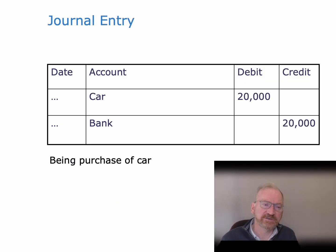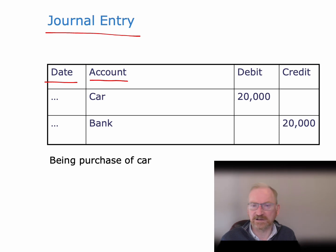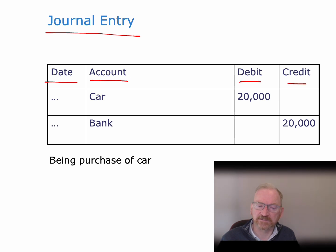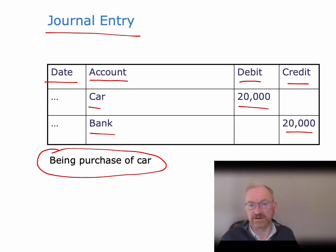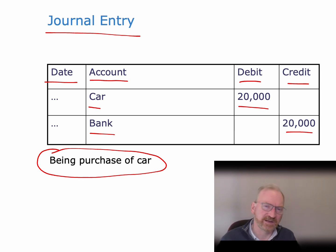This is what a journal entry is going to look like when it's properly laid out. We generally have a date the transaction happened. The second column is for the accounts affected by the transaction. Then we have a column for debits and a column for credits. In this case, we debit the car by putting the number in the debit column and credit the bank by putting the number in the credit column. We also have a brief description at the bottom — in this case, purchase of car — telling us what this transaction was about.